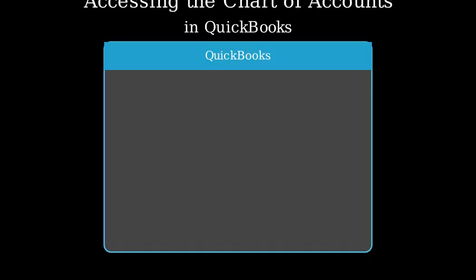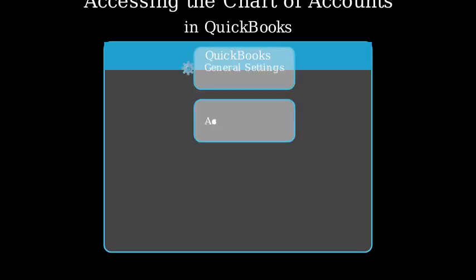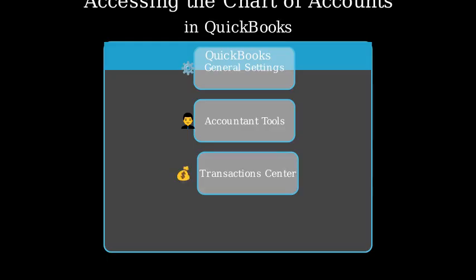Here are the four options we'll examine: the General Settings gear, Accountant Tools, the Transaction Center, and the Report Center.